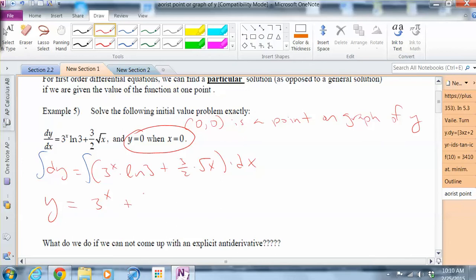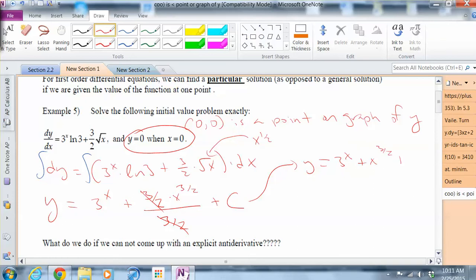Plus, now remember root x is x to the half power. So if I take the antiderivative of that, plus x to the 3 halves divided by 3 halves, because the derivative of x to the 3 halves is 3 halves to the front, 3 halves cancel, and of course plus c. And then these 3 halves end up canceling out. So our equation is y equals 3 to the x plus x to the 3 halves plus c.